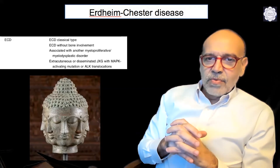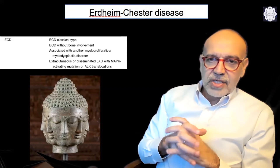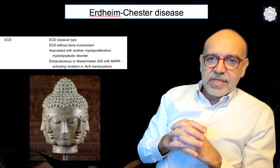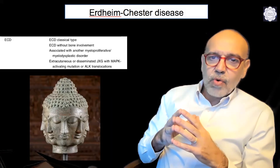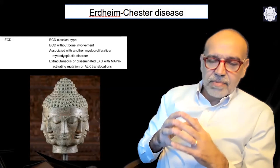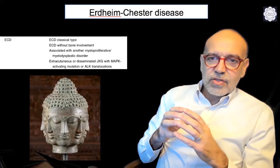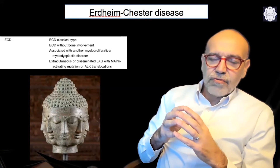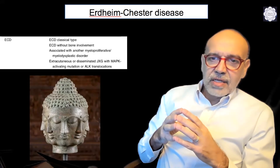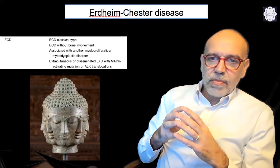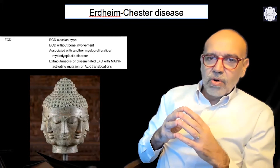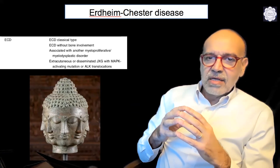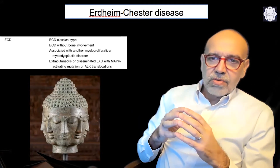Group H is hemophagocytic lymphohistiocytosis, related to macrophage activation syndrome. Erdheim-Chester disease has many phases: there is a typical classical form associated with bone compromise especially in the limbs, a variant without bone compromise — possibly as seen in our patient — another variant associated with myeloproliferative or myelodysplastic processes such as clonal lymphoma or leukemias, and finally juvenile xanthogranuloma in its extracutaneous or disseminated form associated with MAP kinase-activating mutations or ALK translocations.